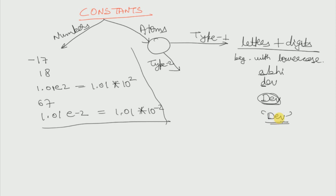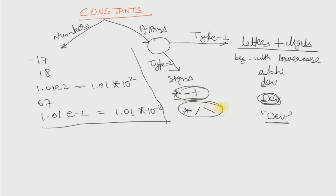Now let us see Type 2 atoms. Type 2 atoms only contain signs — special characters like star, minus, plus, forward slash, backward slash. For example, if we write 'Matt-10' with a single quote, then yes, this is an atom. Inside Type 1 atoms we cannot have special characters, but special characters can be present if we use single quotation marks.